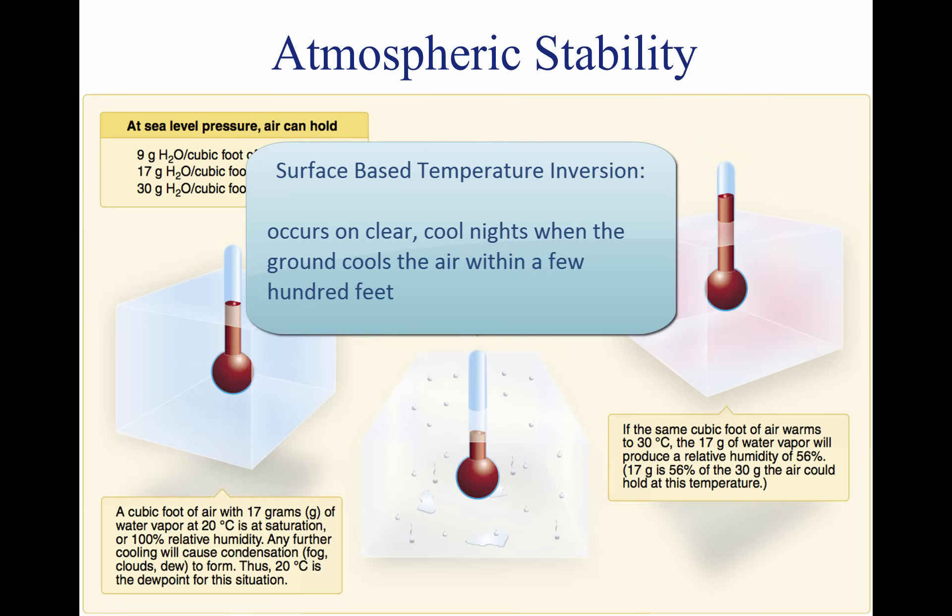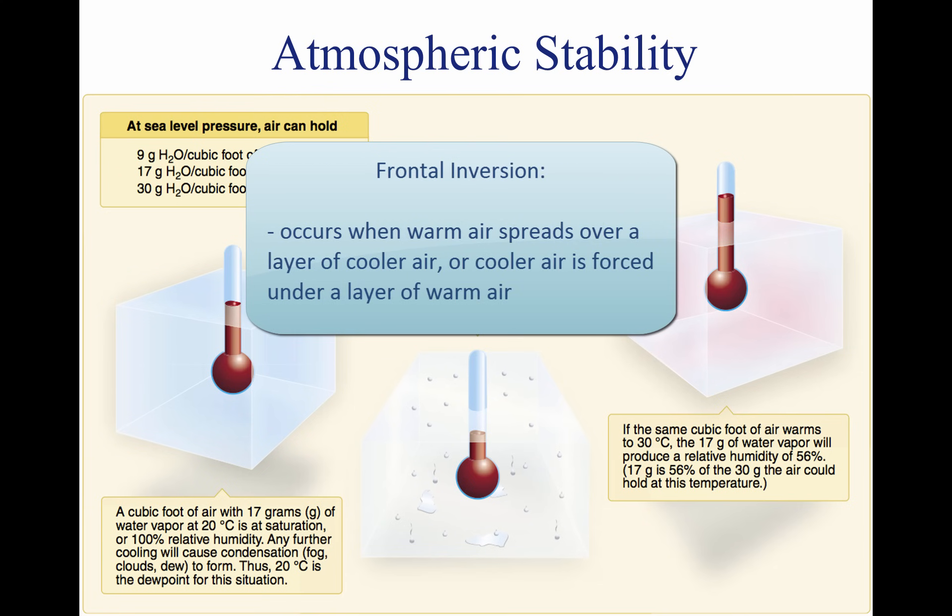Surface-based temperature inversions occur on clear, cool nights, when the air close to the ground is cooled by the lowering temperature of the ground. The air within a few hundred feet of the surface becomes cooler than the air above it. Frontal inversions occur when warm air spreads over a layer of cooler air, or cooler air is forced under a layer of warmer air.